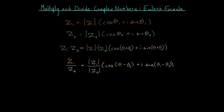This is a useful way to multiply or divide complex numbers, but another perspective we can use is Euler's formula. Euler's formula essentially involves the direction component. Euler's formula is defined as e to the i times theta, which is equal to the cosine of theta plus i times the sine of theta.